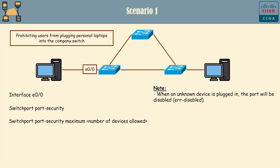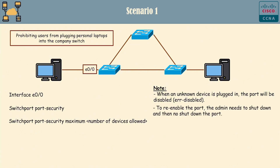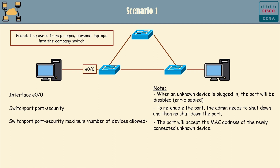After configuring the switch in this way, when an unknown device is plugged in, the port will be disabled. To re-enable the port, the admin needs to shut down and then no-shutdown the port. Afterward, the port will accept the MAC address of the newly connected unknown device. This is a drawback because it allows unauthorized devices to be connected temporarily.